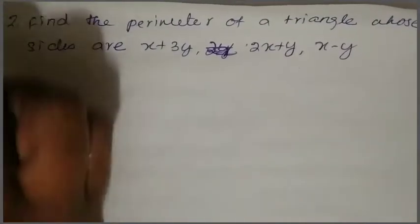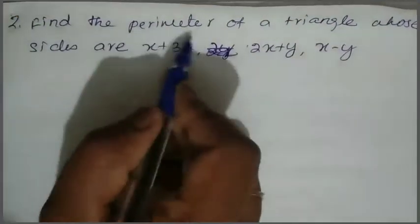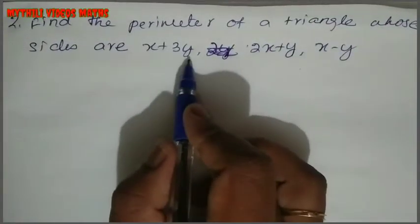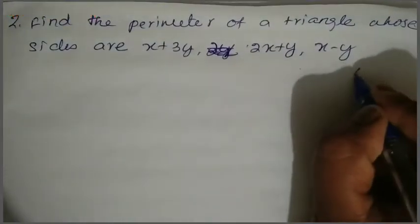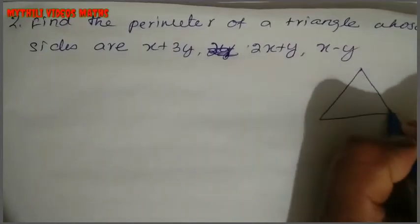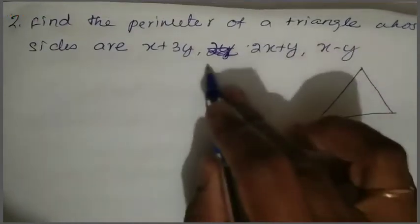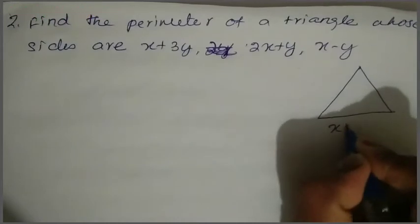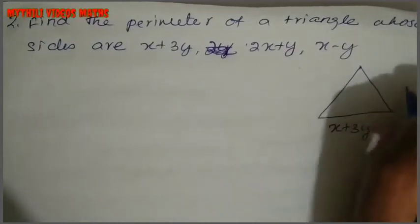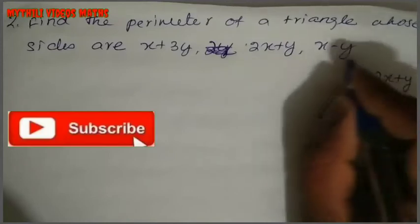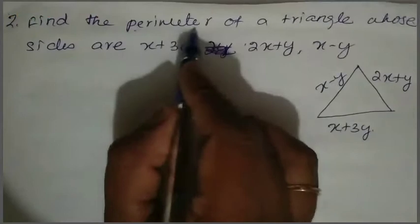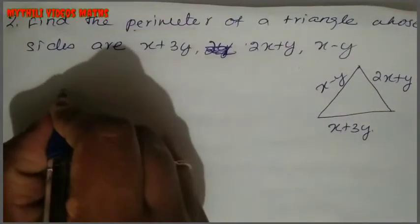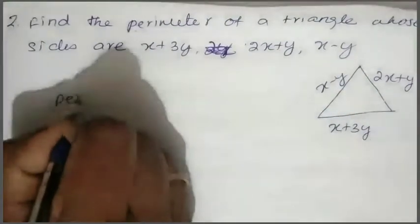Now see the second sum. Find the perimeter of a triangle whose sides are x plus 3y, 2x plus y, and x minus y. This is the triangle with three sides, where one side is x plus 3y, another is 2x plus y, and the third is x minus y. What is the formula for perimeter?